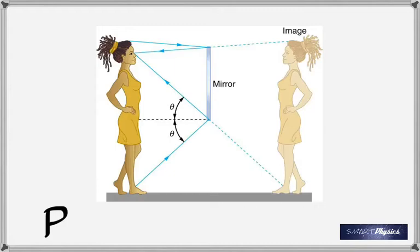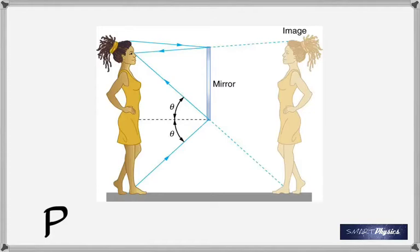If you look at this image, it's not a real image. The rays after reflection do not actually go there. The two reflected rays — do they come from the same point? No, they don't actually meet. So this image that you see is a virtual image, a false image.